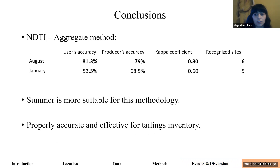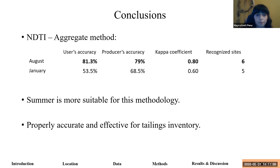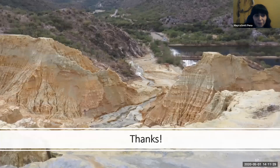To conclude, we learned that the methods applied in this present study revealed high accuracy percentages to effectively identify mine tailings using remote sensing and GIS methods. And the summer is the more suitable season to carry out the method, having greater accuracy. Thank you, and I'm open to questions.